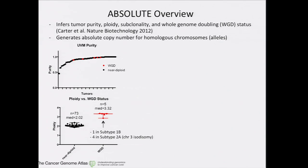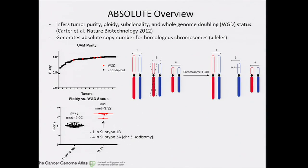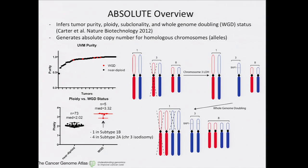Here's a quick figure showing how chromosome 3 isodisomy could arise. Starting with a diploid tumor on the left, it loses one red allele, leading to loss of heterozygosity in chromosome 3. When it whole genome doubles, you get an isodisomy of chromosome 3 and a tetrasomy in all other chromosomes.